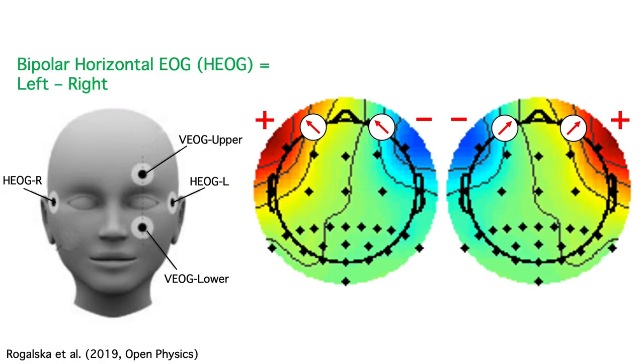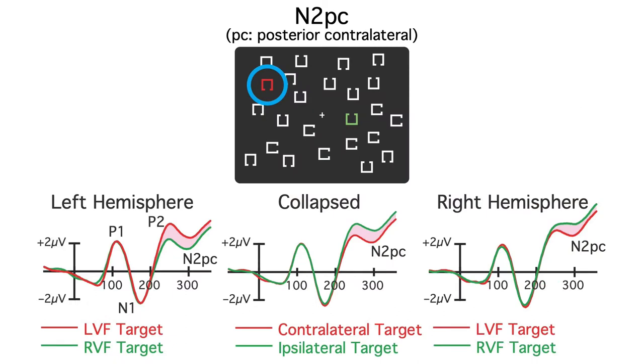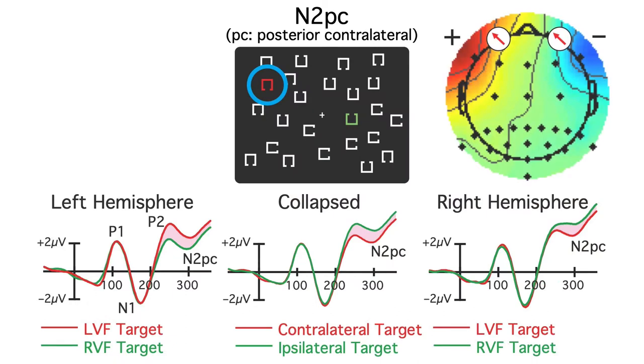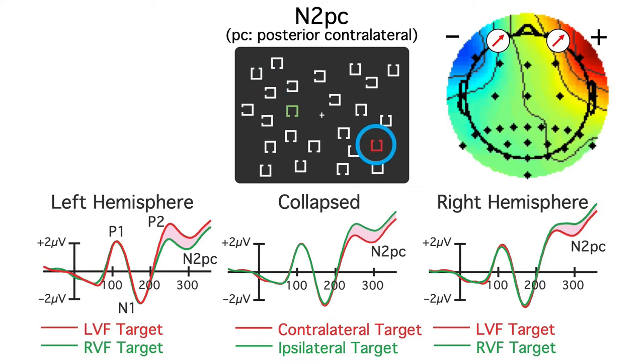Horizontal eye movements can produce major confounds in N2PC experiments. If the subject makes an eye movement toward a target on the left, the EEG will be negative over the right hemisphere, which is contralateral to the target. And if the target is on the right and the eyes rotate rightward, the EOG will be negative over the left hemisphere, which is again contralateral to the target.